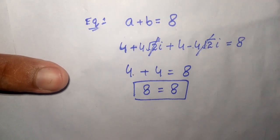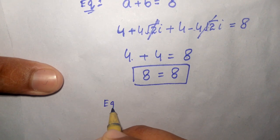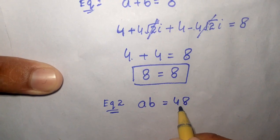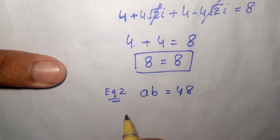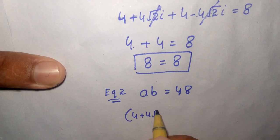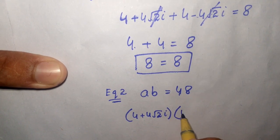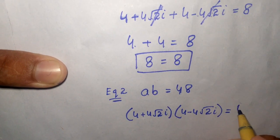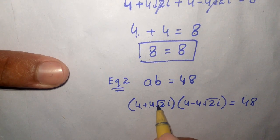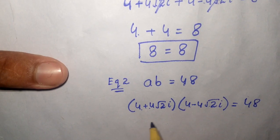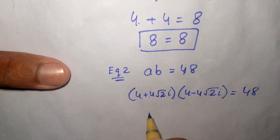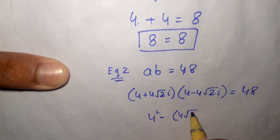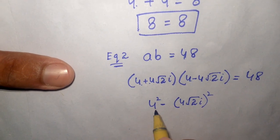Now we verify equation number 2: a times b equals 48. We substitute the value of a as (4 plus 4 square root of 2 i) and the value of b as (4 minus 4 square root of 2 i). This is in the form of a squared minus b squared identity, so it becomes 4 squared minus (4 square root of 2 i) squared.